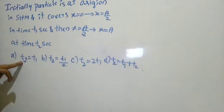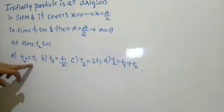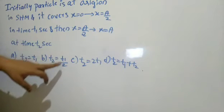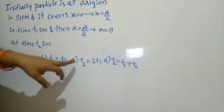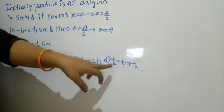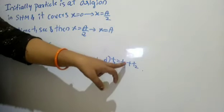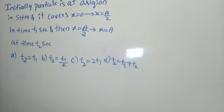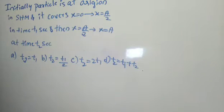The options are: t2 = t1, t2 = t1/2, t2 = 2t1, or t2 = t1 + t2. We need to determine which is the correct answer, and we will go ahead with the solution.